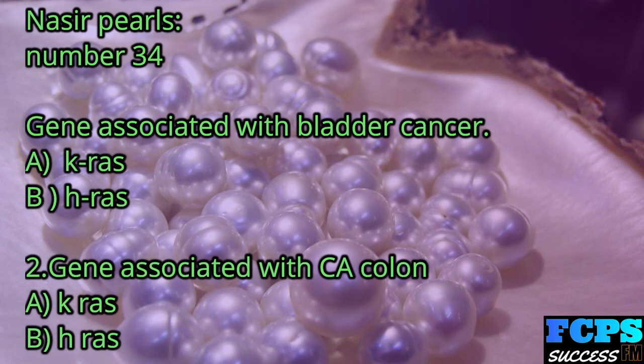Nasir Pearl number 34: Genes associated with bladder cancer: A. KRAS, B. HRAS. Genes associated with colon cancer (CA colon): A. KRAS, B. HRAS.